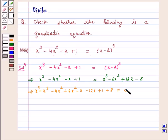On solving this we get 2x squared minus 13x plus 9 equals 0.